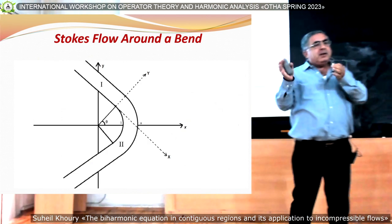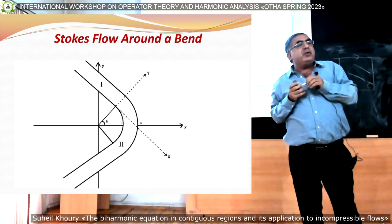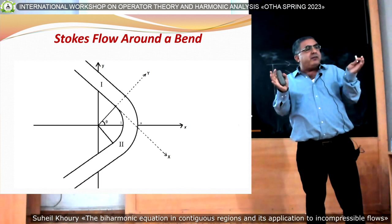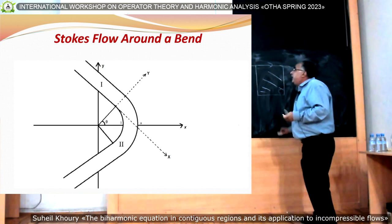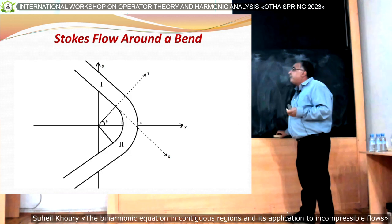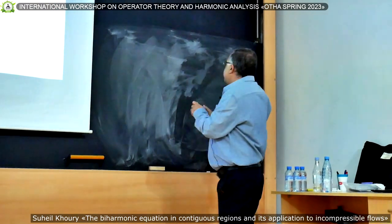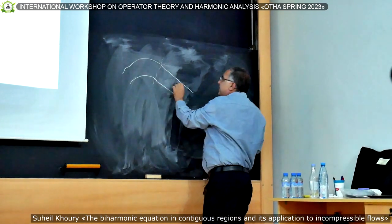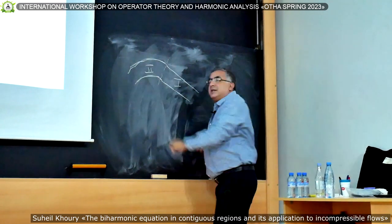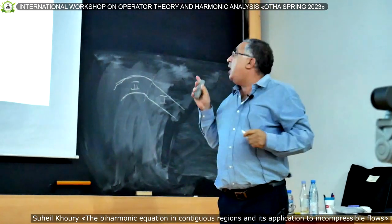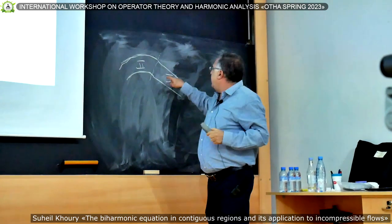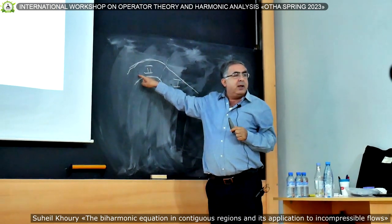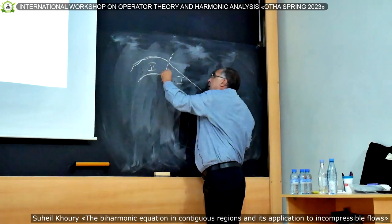The title of my talk uses the word 'contiguous region.' What is a contiguous region? A contiguous region is a region consisting of simple regions — for example, flow around a bend. Why is the bend contiguous? It's a rectangle and a sector: the sector part here and the rectangular part there. That is a contiguous region.